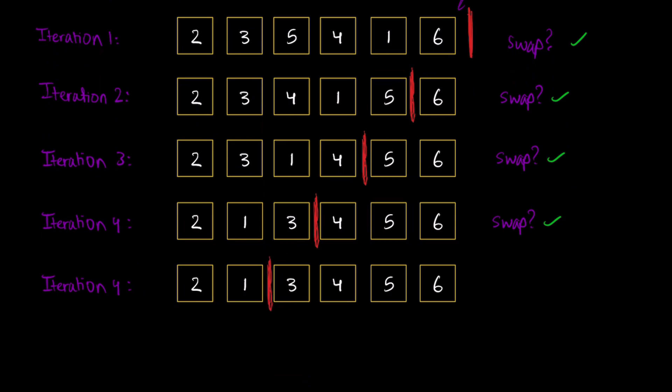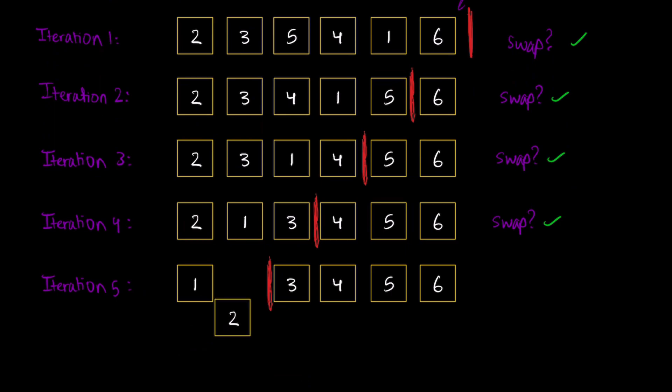This is iteration 5. Now we compare 2 and 1 — we have to swap those, so 1 goes here and 2 goes here. And now we're at the end. We did perform a swap, so we'll duplicate that and move on to the final iteration.